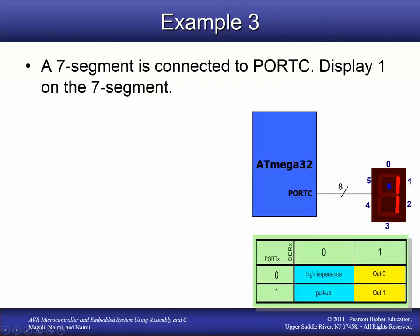Here's another example using a seven-segment LED — seven LEDs configured in a figure-eight pattern, connected to Port C. Port C pin 0 connects to one LED segment, pin 1 to the next, and so on. We want to display the number one. Assuming a common-cathode LED, segments turn on when the corresponding pin is high and off when low. So Port C pins 1 and 2 need to be high, all others low, and all pins are outputs.